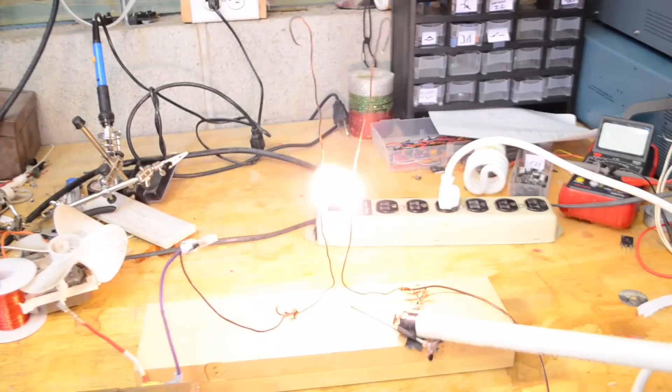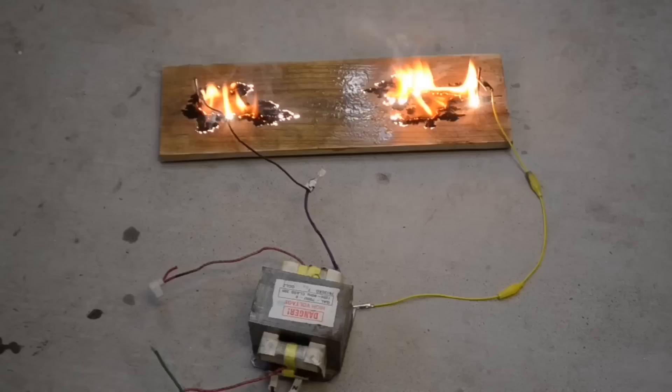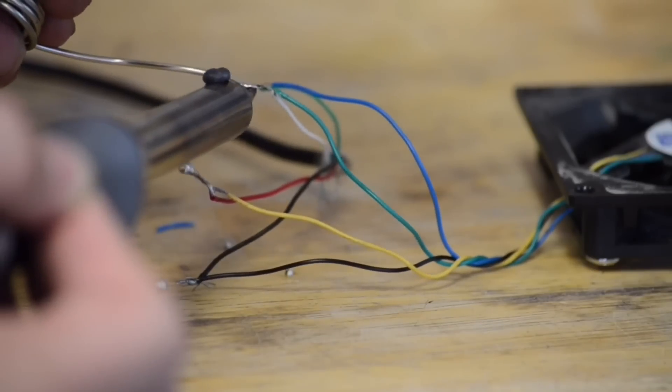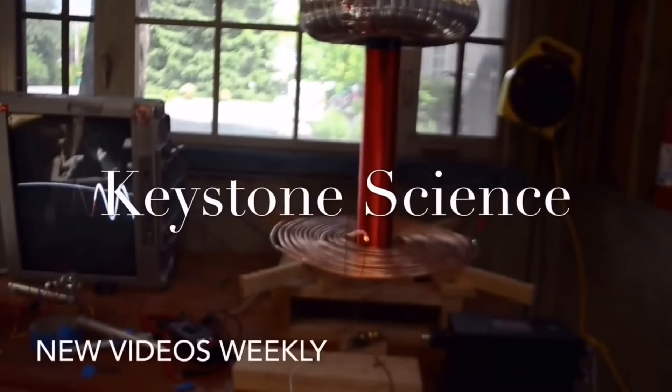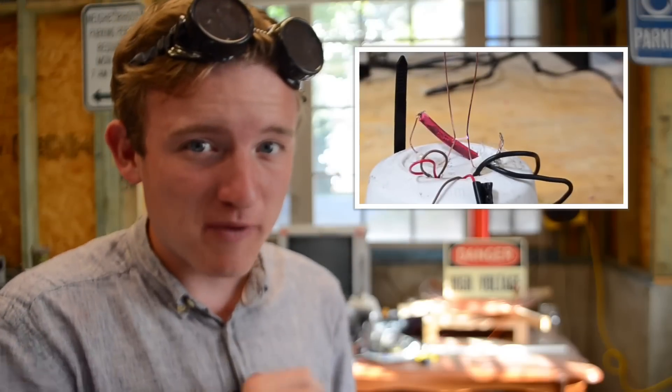You're watching Keystone Science, and in today's episode we're going to show you how to make your very own Jacob's Ladder. In a previous episode I showed how to build a small Jacob's Ladder that's portable, and you can see that right here. A link will be in the description below if you want to go view that.